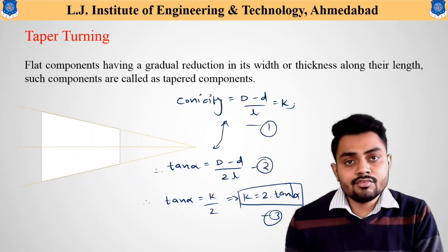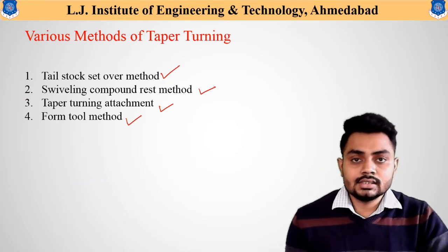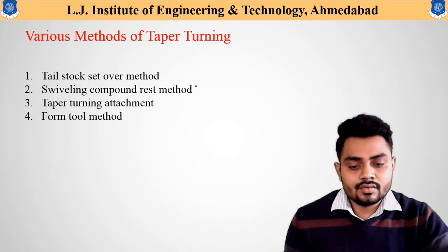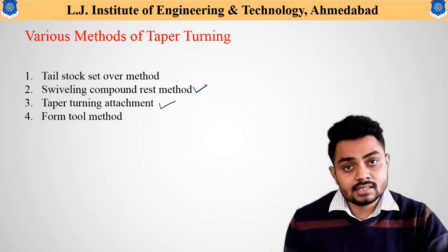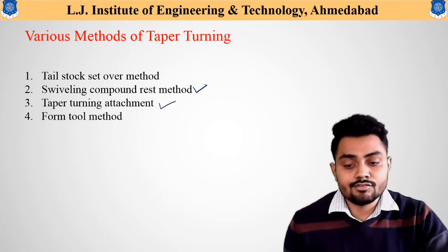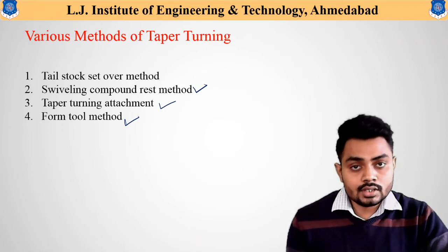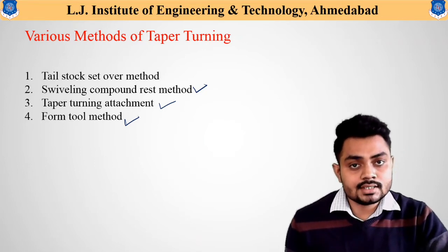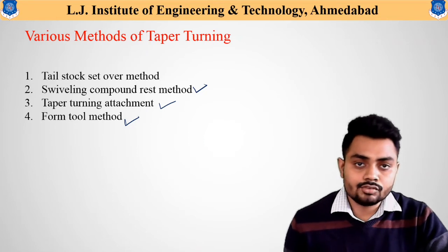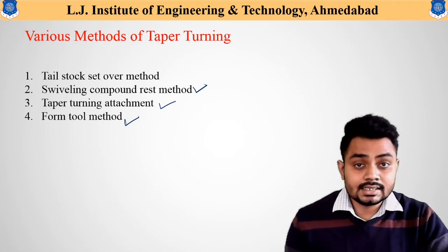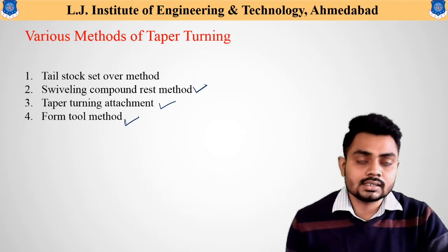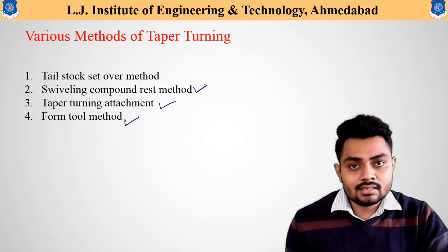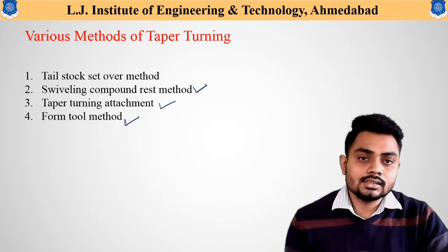The different taper turning methods are: first, the tailstock set-over method; second, the swiveling compound rest method; third, the taper turning attachment; and fourth, the form tool method. From all these four methods, the first two are very important from an examination point of view — the tailstock set-over method and the swiveling compound rest method. Now we will start our discussion with the tailstock set-over method.